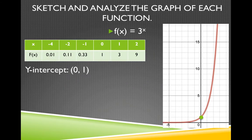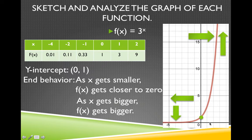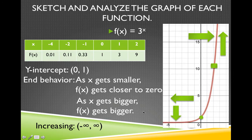The y-intercept of this function is 1. For end behavior: as x gets smaller, the y value gets closer to 0, but will never equal 0. On the other end, as x gets bigger, the y values also get bigger. This is an increasing function over its whole domain — the y value is increasing from negative infinity to infinity.